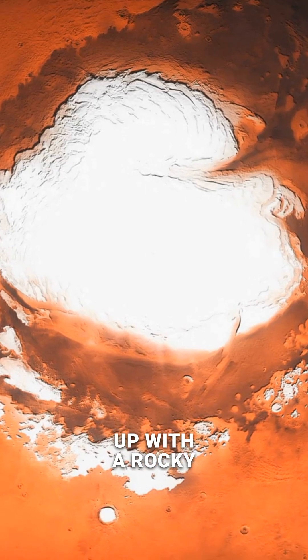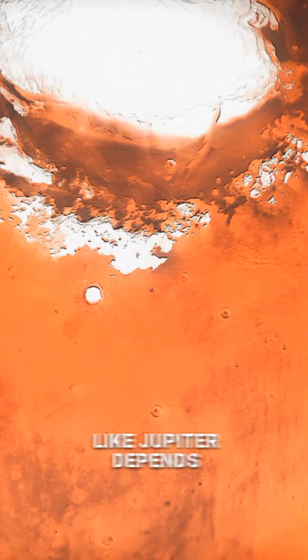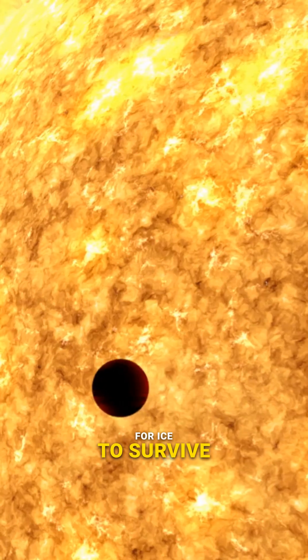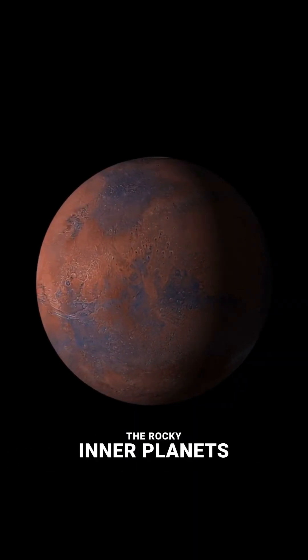Now, whether you end up with a rocky planet like Earth or a gas giant like Jupiter depends on where in the disk you form. Close to the star, it's too hot for ice to survive, so you only get to build with rock and metal. That gives you the rocky inner planets.